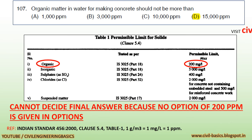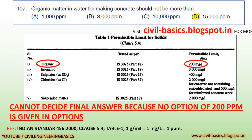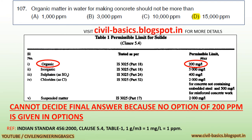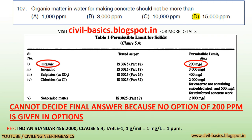Question: Organic matter in water for making concrete should not be more than: a) 1,000 parts per million, b) 3,000 parts per million, c) 10,000 parts per million, d) 15,000 parts per million. As per Indian Standard IS 456:2000, Clause 5.4, Table 1, the permissible maximum limit for organic solids is 200 mg/L, which equals 200 ppm. However, no such option is given in the question, so we cannot decide the final answer. Visit civilbasics.blogspot.in for more details.